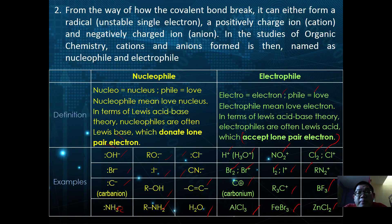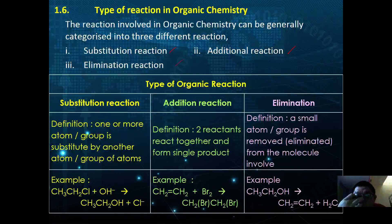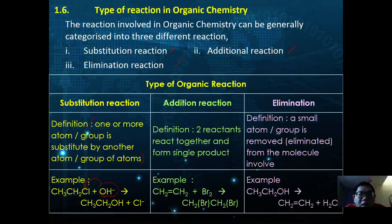Reactions in organic chemistry are categorized into three types: substitution, addition, and elimination. In a substitution reaction, one or more atoms or groups of atoms are replaced by another group. For example, in the hydrolysis of a haloalkane, the hydroxide ion substitutes the chlorine to form an alcohol and a chloride ion.